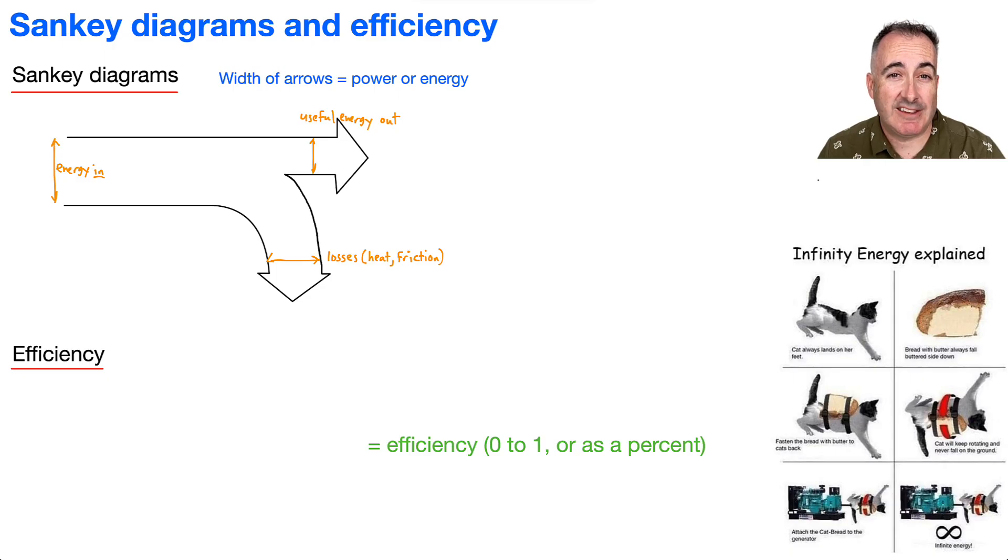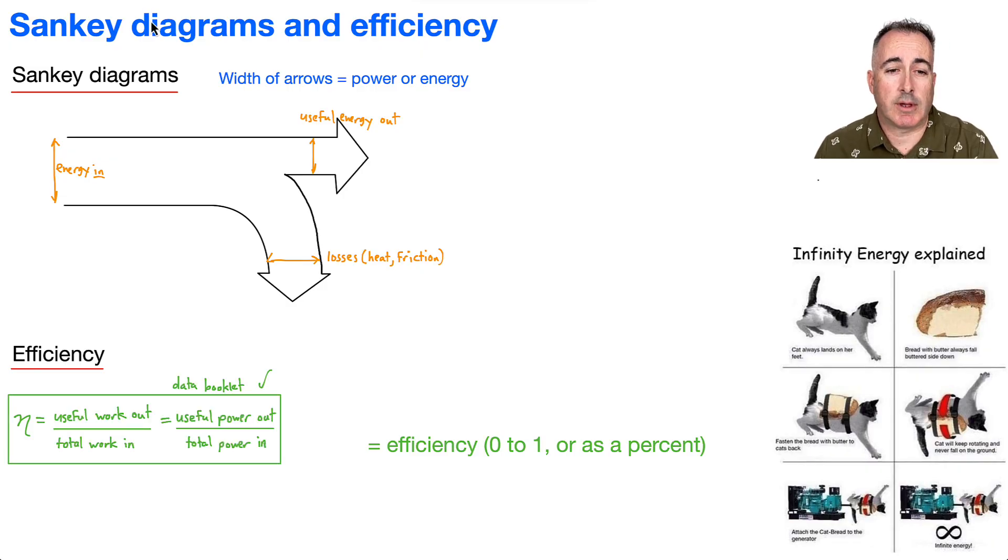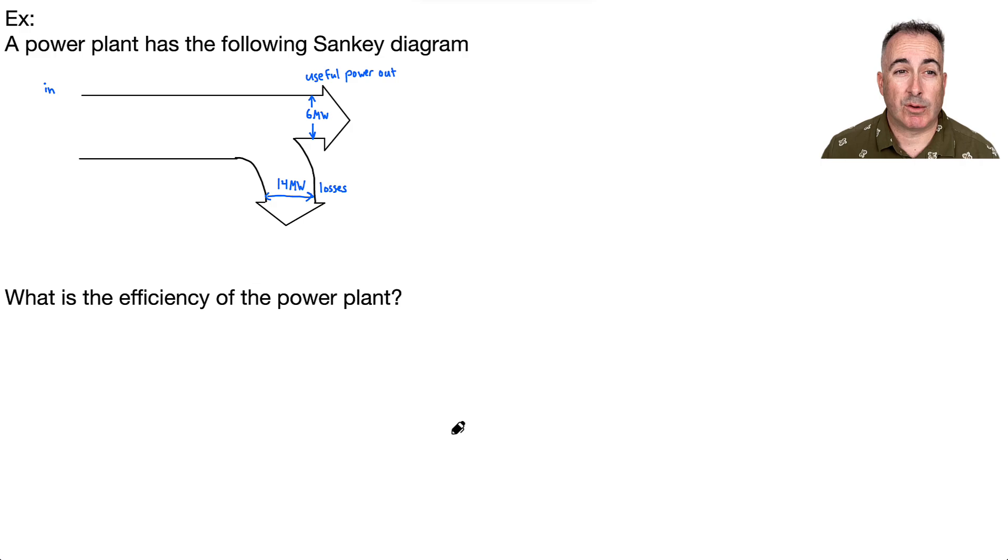We have an equation for efficiency, and we're going to use this Greek symbol eta for it. It's going to be equal to the useful work out divided by the total work in, or the useful power out over the total power in. This is not something you have to memorize because it's in your data booklet. Remember that eta here, that's the efficiency, and we can either write it as a decimal between zero and one, or you can also do it as a percent. If you get 0.5, that means it's 50% efficient.